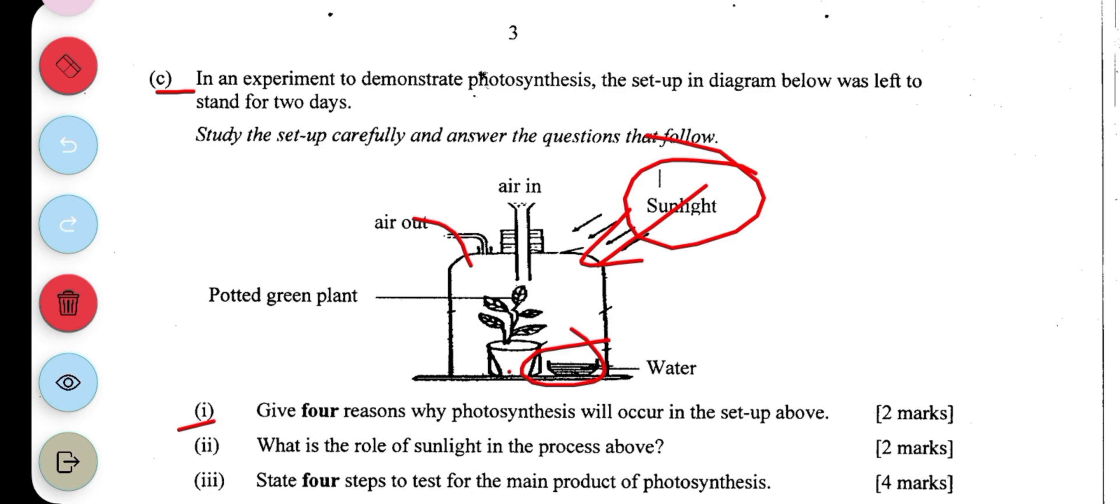There's also the availability of carbon dioxide. There's also the presence of chlorophyll. What is the role of sunlight in the process above? The sunlight is to give energy to change the water and carbon dioxide to glucose.